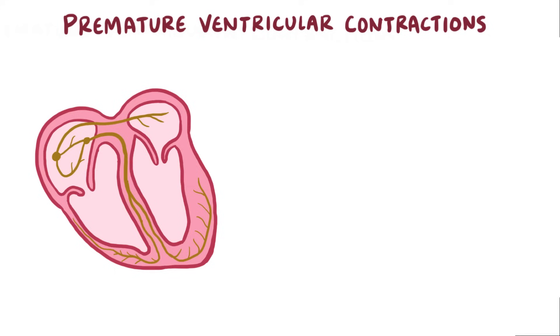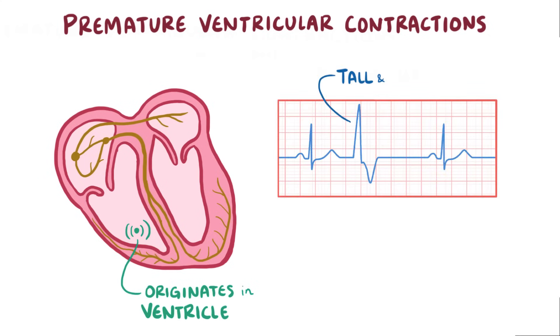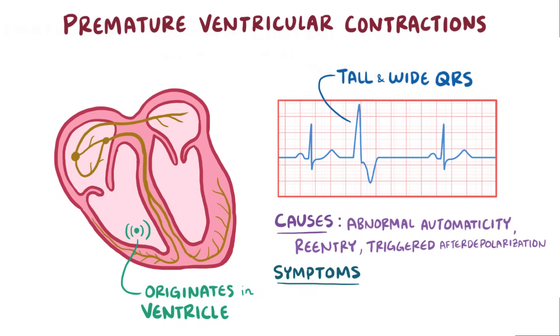Alright, as a quick recap, premature ventricular contractions are abnormal heartbeats that originate in the ventricles and show up as tall and wide QRS complexes on an ECG. They can be caused by abnormal automaticity, reentry, or a triggered after depolarization. They're usually asymptomatic, but when they're a sign of an underlying disorder, treatment including radiofrequency ablation might be necessary.